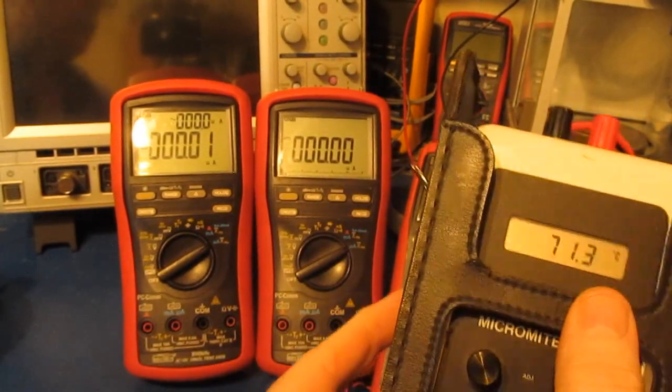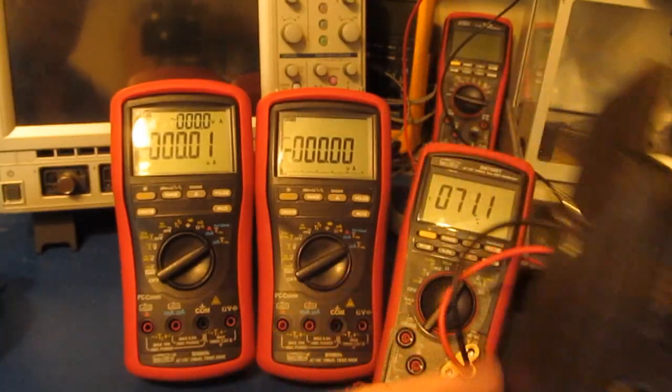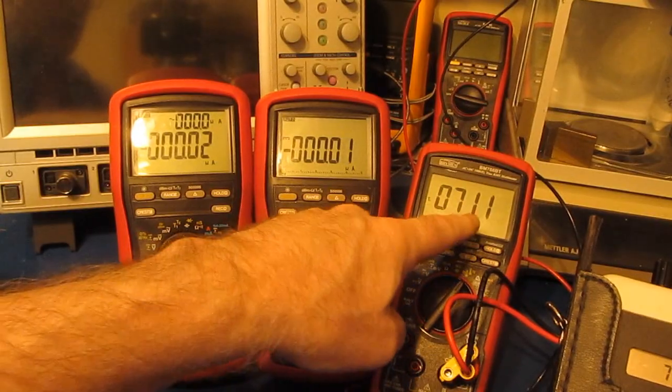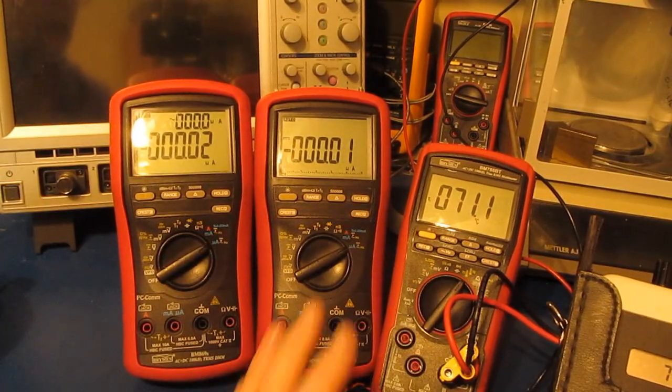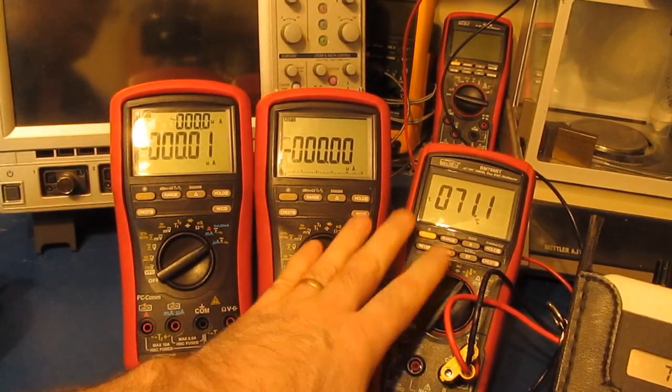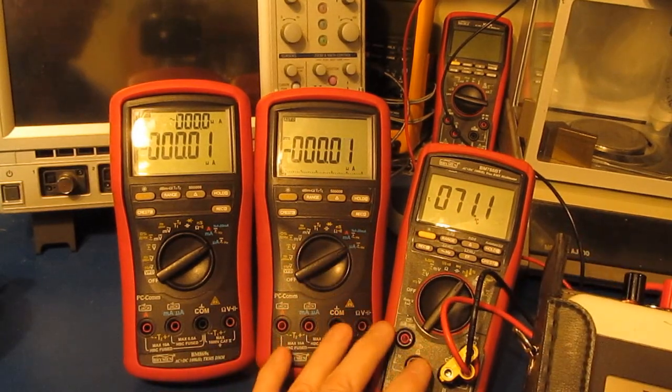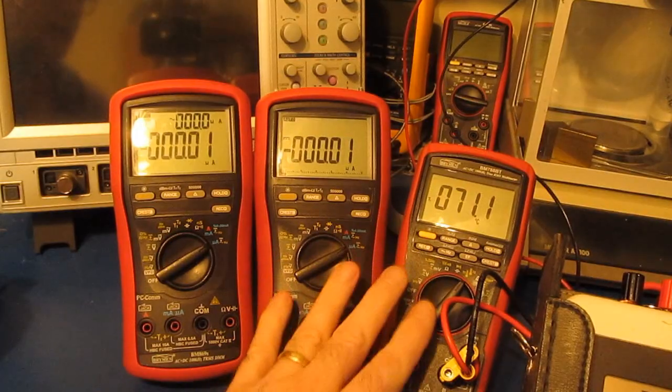for 71.3 degrees Celsius, and you can see our Brymen BM788BT is measuring 71.1. Now this is probably the closest I have to an actual calibrated meter. This was supplied by Brymen, and I assume this has